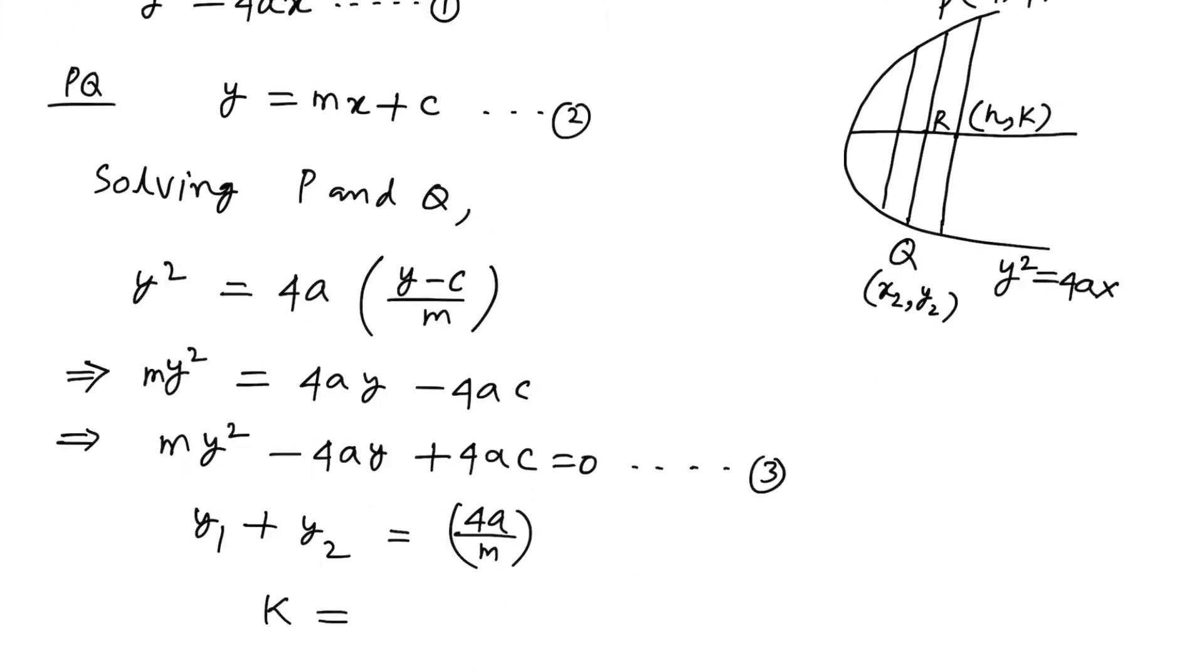And as we know, K is (Y₁ plus Y₂) by 2, because R is the midpoint of P and Q. So from here, it is (4A by M) by 2, that is 2A by M.